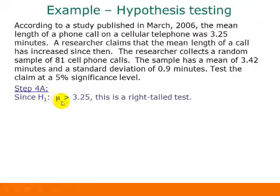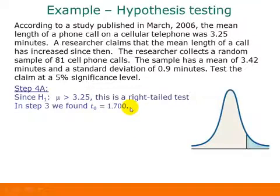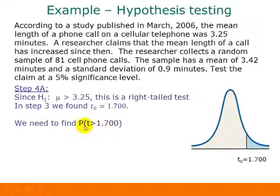Our alternative hypothesis was that the mean is greater than 3.25. Since this inequality is pointing to the right, this makes it a right-tailed test. In step 3 we found our test statistic was 1.700. Since we have a right-tailed test, we're going to be shading to the right of our test statistic. So we're finding the area in this right tail, or the probability that T is greater than 1.700.